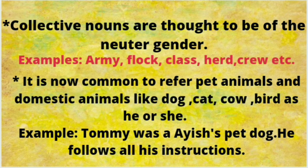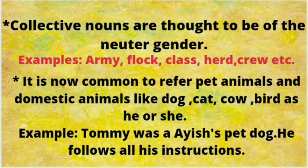Once again, I will remind you: all collective nouns are considered to be of neuter gender — army, flock, class, herd, crew will all be considered neuter gender. One more point: it is now common to refer to pet animals and domestic animals like dog, cat, cow, and bird as he or she. For example, 'Tommy was his pet dog — he follows all his instructions.' So we used he for a pet dog named Tommy.